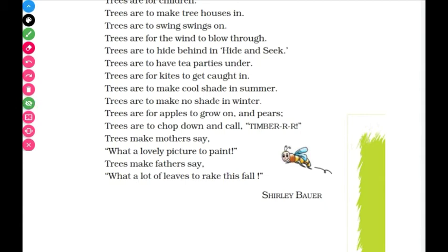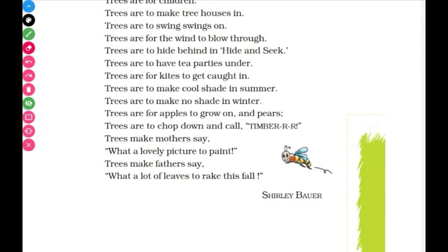Trees are for apples to grow on, and pears — pears and apples are fruits that grow on trees. Trees are to chop down and call timber. 'Chop down' means to cut down, and when we cut a tree to use for furniture, we call it timber.